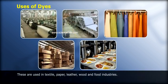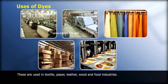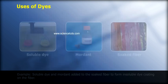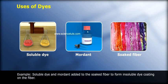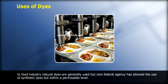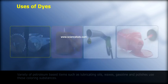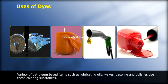Uses of dyes: these coloring substances are used in different types of industries, including textile, paper, leather, wood, and food industries. For example, a soluble mordant dye is added to soaked fiber to form an insoluble dye coating on the fiber. In the food industry, natural dyes are generally used, but federal agencies have allowed the use of synthetic dyes within a permissible level.